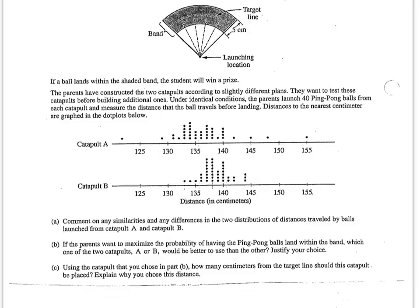So we got part A, comment on any similarities and differences in the two distributions. Yeah, I'm going to talk about center, shape, and spread, maybe make a comment about outliers, and talk about that in context.